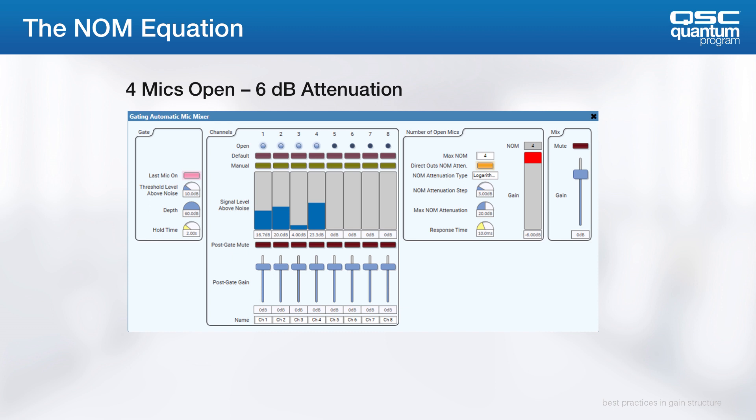Each doubling in the number of open mics will add 3 dB more in the total signal, so the component pulls negative 3 dB out by attenuating the overall output. Ideally, no matter how many mics I open, I'm never going to go over that initial level you started with at one open mic, ultimately keeping you out of the possibility for feedback.